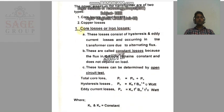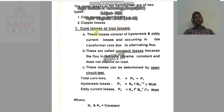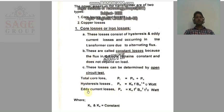Let us start from core loss. As its name suggests, these losses occur in the core of the transformer. We can divide core loss into two parts: the first one is hysteresis loss and the second one is eddy current loss.